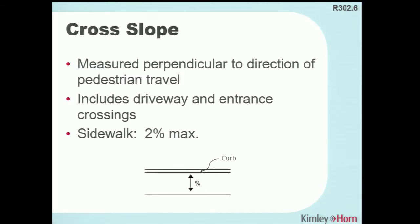The cross slope of the sidewalk has not changed — it's always been a maximum of two percent and still is. This applies not only to sidewalk cross slope but also to driveway crossings and entrances on a cross street, though cross street cross slopes are slightly different.